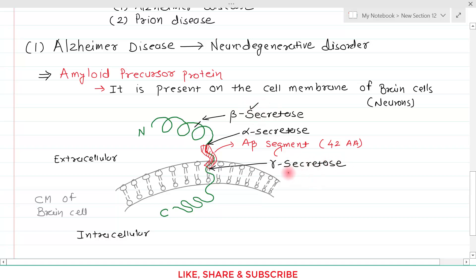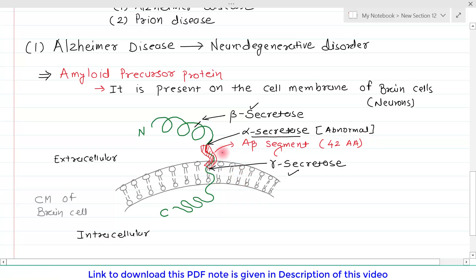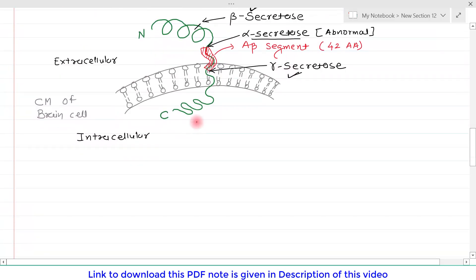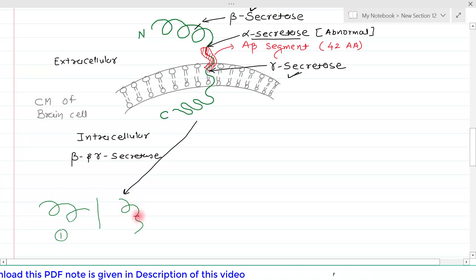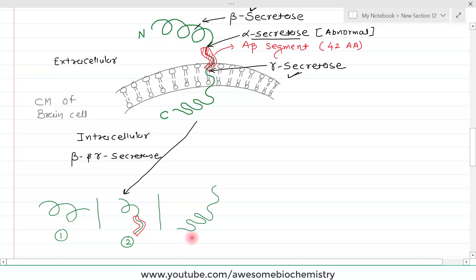Beta secretase and gamma secretase are physiological enzymes, whereas alpha secretase is the abnormal enzyme. Normally, beta secretase acts first and then gamma secretase. When both beta and gamma secretase act, the amyloid precursor protein is divided into three pieces: one fragment from the endopeptidase cleavage, one segment containing the A-beta segment, and the complete C-terminal segment. In this case all three segments are soluble and can be easily cleared.